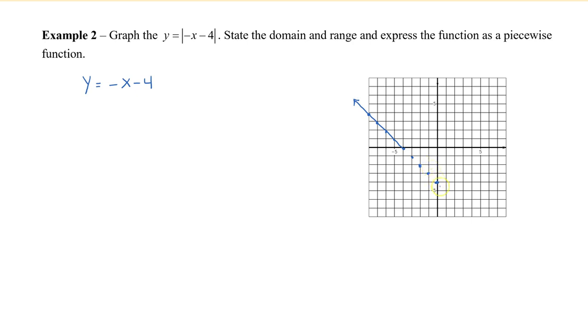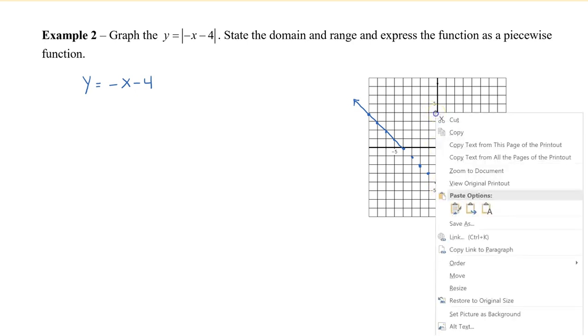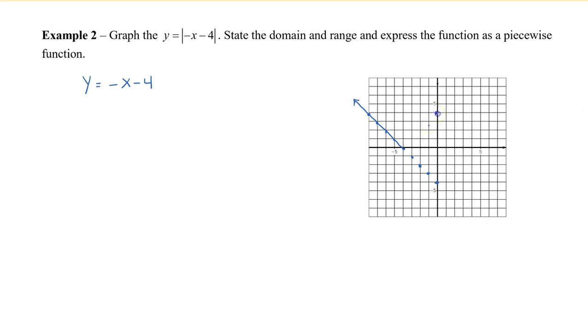And then the points that are below the x-axis, such as negative 4, a y value of negative 4 will then become positive 4. So we're going to plot that up here. And then negative 3 will become positive 3, and so on.